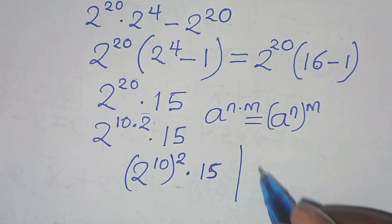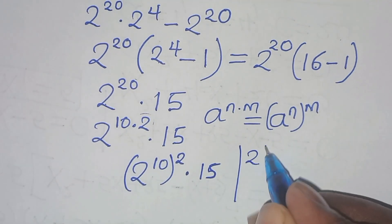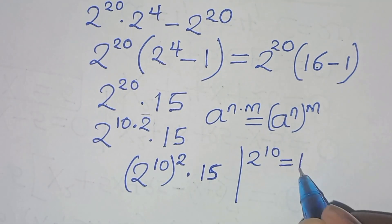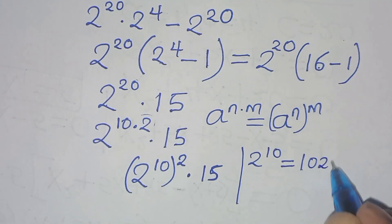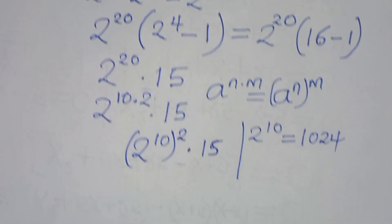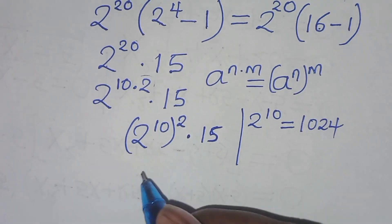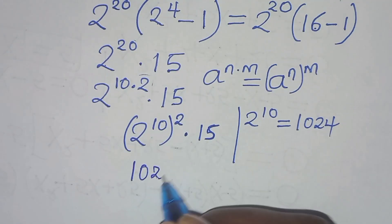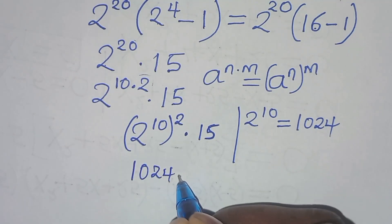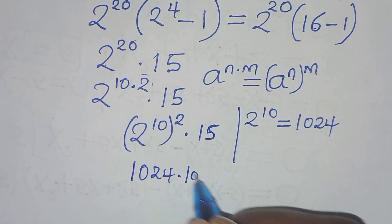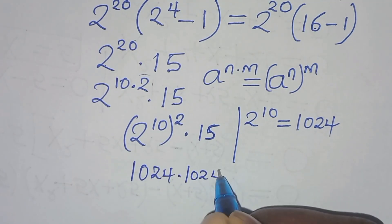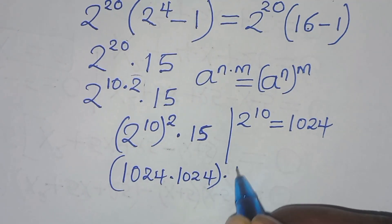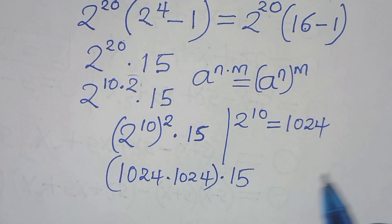We find that 2 to the power 10 is equal to 1,024. So this implies that here we have 1,024 times 1,024, then times 15.